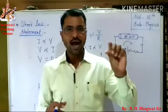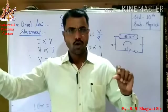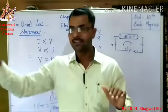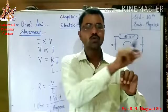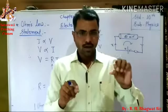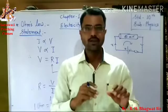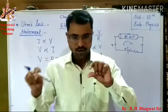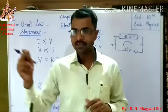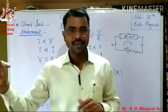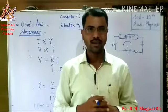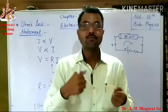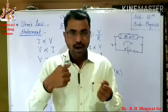For example, if we consider an iron rod, silver, aluminum, or copper rod, then the resistance of iron is greater than the resistance of copper, because the resistance of a material depends on how compactly the atoms are packed inside that conductor.